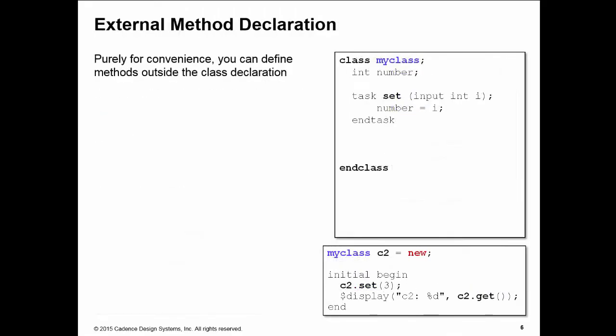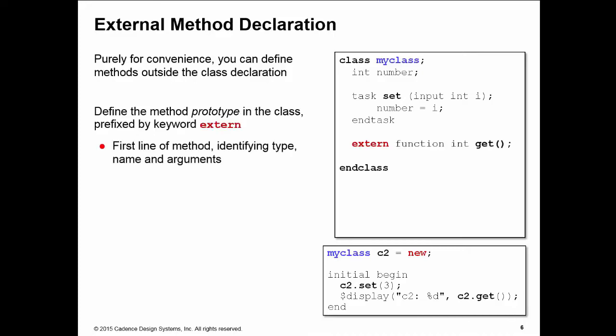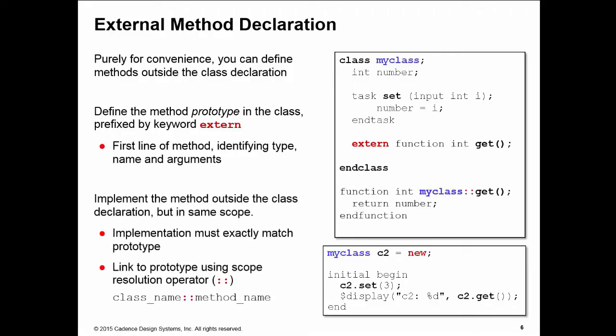Now let's have a look at the extern declaration for classes. For convenience and readability, you can declare a class method outside of the class declaration. To do this we declare the prototype of the method and prefix the prototype with the extern keyword. The prototype is basically the first line of the method: it identifies whether it's a task or a function, tells us the name, and also tells us the type and number of arguments.